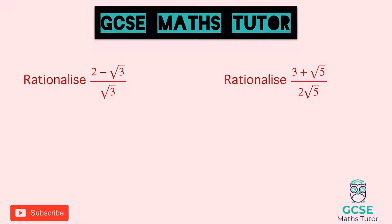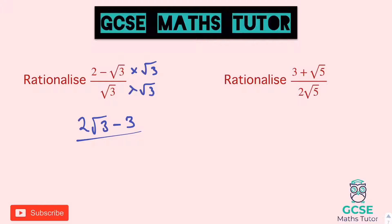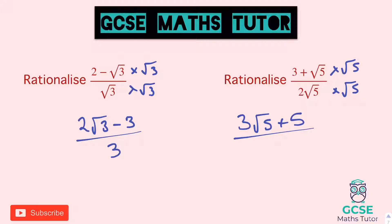Here are two questions for you to have a go at — pause the video and have a go. For the first one, times the top and bottom by root three, giving two root three minus three over three. For the second one, times the top and bottom by root five: we get three root five plus five over two times root twenty-five. On the bottom, two root twenty-five is two times five, so ten on the bottom. Those are your two answers.